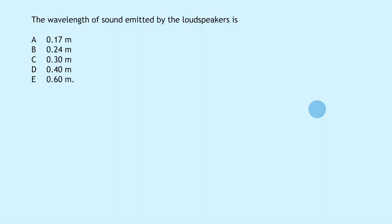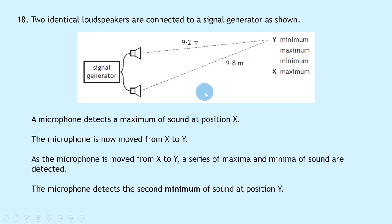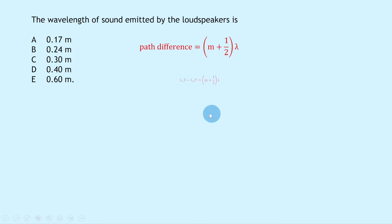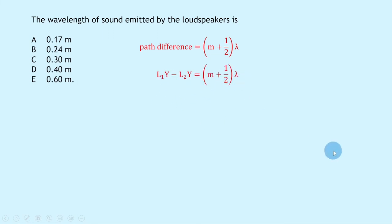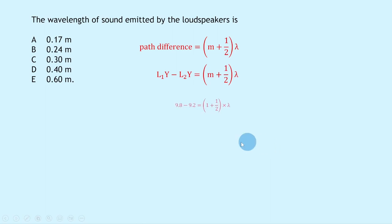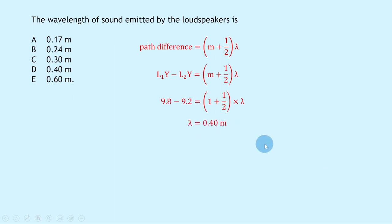For a minimum, path difference = (m + ½)λ. Calling the loudspeakers L₁ and L₂, the path difference is L₁Y − L₂Y = 9.8 − 9.2 = 0.6 m. For the second minimum, m = 1 (since the first minimum has m = 0), so 0.6 = (1 + ½)λ = 1.5λ. Dividing: λ = 0.6 / 1.5 = 0.40 metres, which is option D.